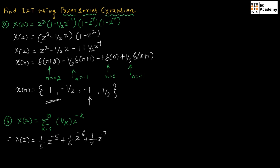For K equal to 8, we get (1/8) Z to the power of minus 8. For K equal to 9, we get (1/9) Z to the power of minus 9. For K equal to 10, we get (1/10) Z to the power of minus 10.